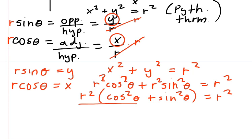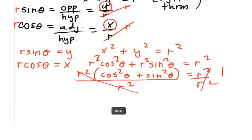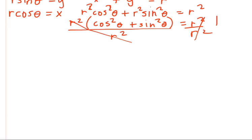And now we can divide both sides by r squared. So these r squareds will cancel. r squared divided by r squared is just one. And now we are left with the famous identity I was just trying to prove: cosine squared of theta plus sine squared of theta is equal to one.